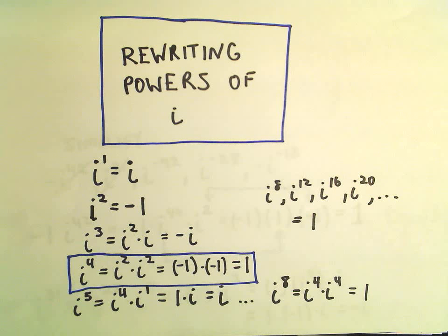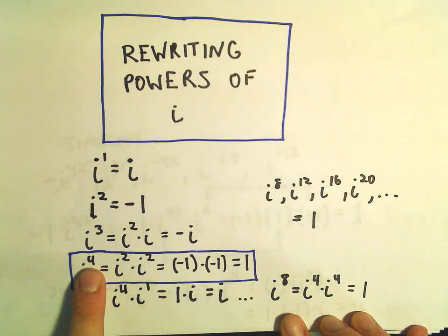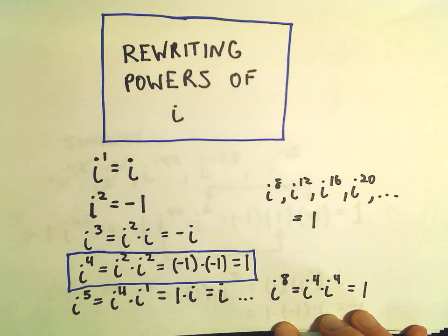Alright, in this video I want to do the rest of my examples about rewriting powers of i. And again, one of the main observations I use is that i raised to an exponent that's a multiple of 4 equals 1.